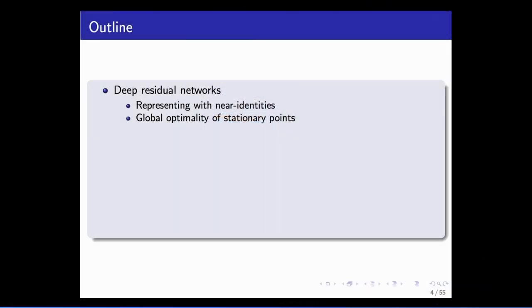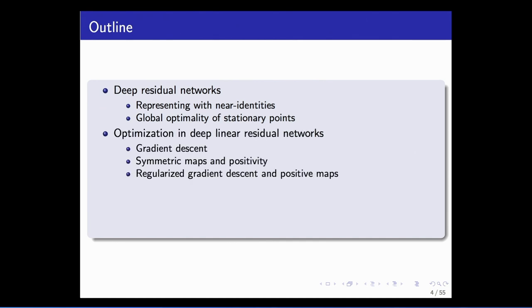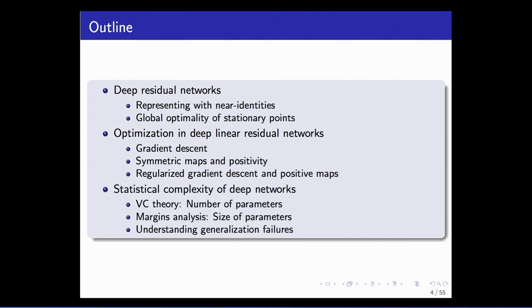Those are the two broad topics of the talk today. I want to start by focusing on deep residual networks, which are of big interest particularly in computer vision applications. We'll look at representation and optimization properties of these networks, look at recent results about optimization in deep networks — where we have to backpedal and work with linearly parameterized networks — and the third part of the talk is about statistical complexity of deep networks.